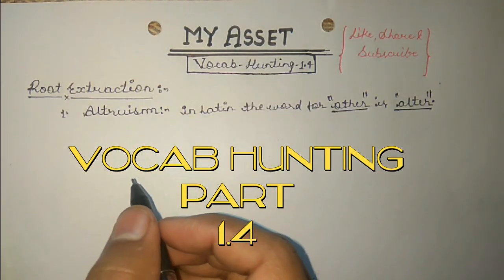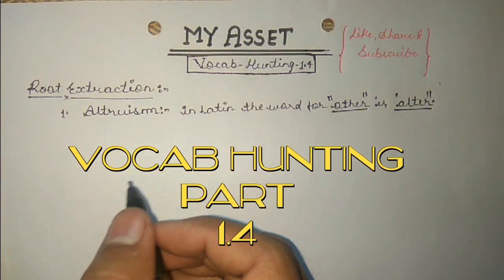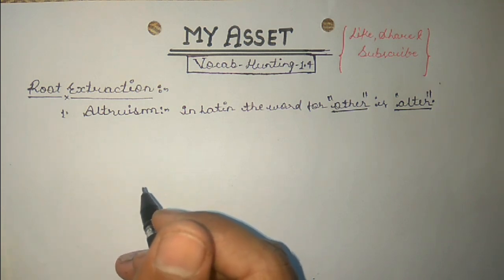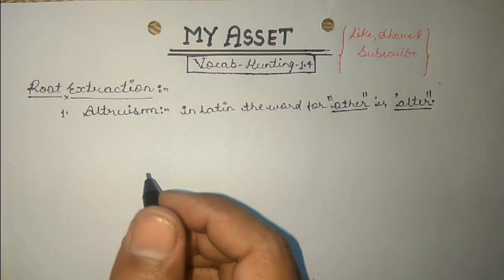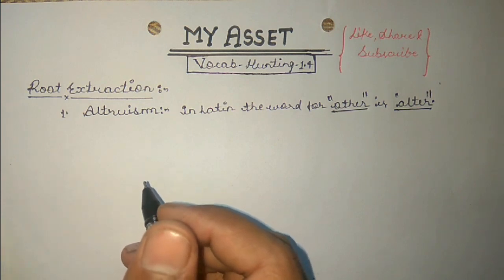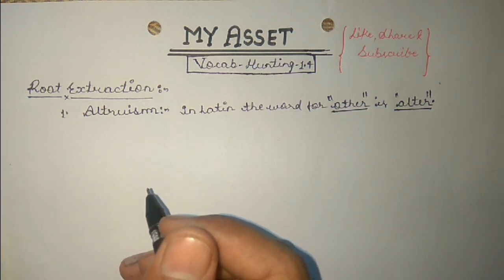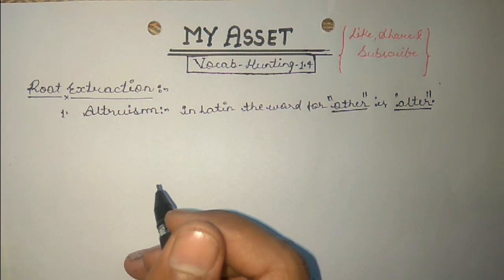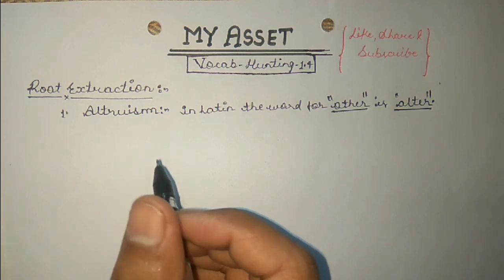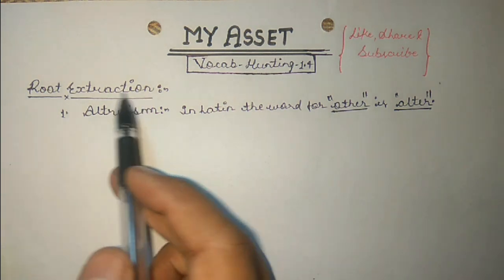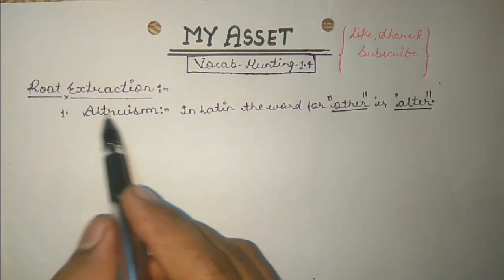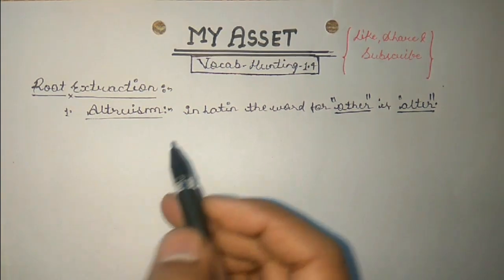Hello friends, I welcome you all to my asset channel. We are back on this series — vocab hunting. This is the fourth part of the series vocab hunting. If you haven't watched our previous videos, you should go through the description box where there are some links. In this video we are going to discuss some words and extract their roots. The first word is altruism.